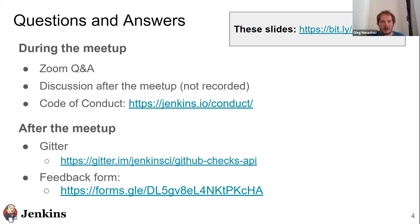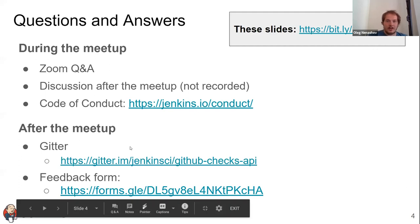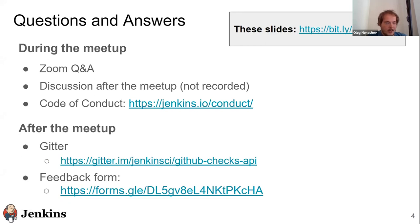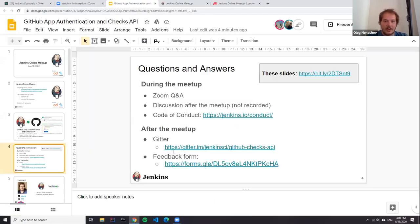After we finish the recording, we will have an open discussion where we'll grant everybody voice permissions, so it will be a kind of open zone where we can discuss questions related to the talk and other Jenkins use cases. There is also a GitHub channel specifically for the GitHub Checks API project, and we appreciate feedback from meetup participants — there's a feedback form and I'll share a link in the chat.